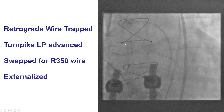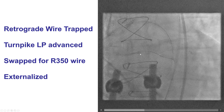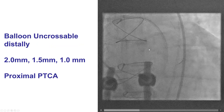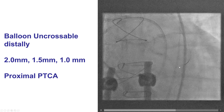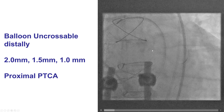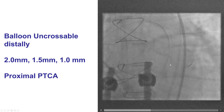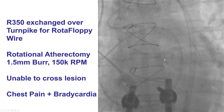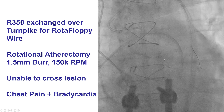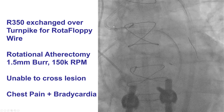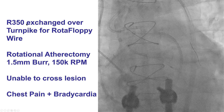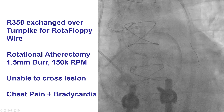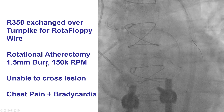We then exchanged the wire for an RG3 350, but we had difficulty advancing equipment distally. We could not get even a small balloon to go through the distal circumflex because of significant calcification. Eventually, we were able to exchange over a retrograde microcatheter the RG3 350 for a Rotafloppy wire.